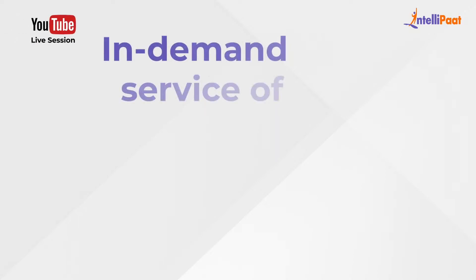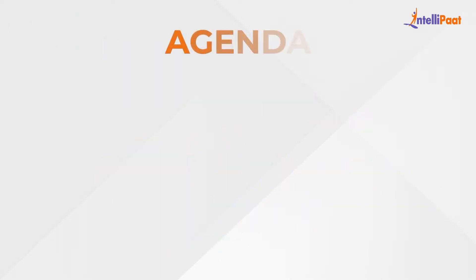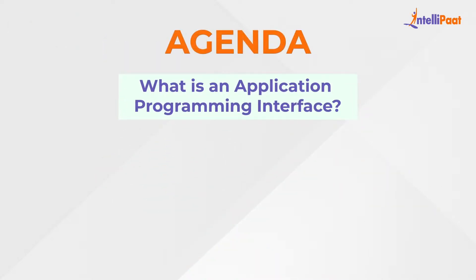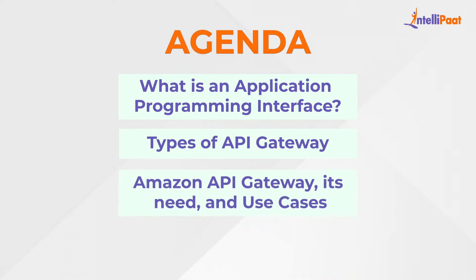Hello everyone and welcome to Intellipaat. In this video you will learn about the in-demand service of AWS which is the Amazon API Gateway. First we will understand what an application programming interface is, then we will move to the types of API, then we will talk about the Amazon API Gateway and its needs and use cases, and finally we will see about the pricing of API Gateway.